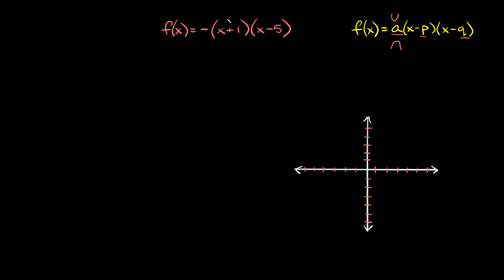So we have f of x equal to negative, then in parentheses x plus 1 times x minus 5. Our coefficient a is a negative 1, so it's a negative number — that means our parabola is going to open down. We can also take the x-intercepts from here: we have a positive 1 and a negative 5, so our x-intercepts are going to be negative 1 and positive 5.